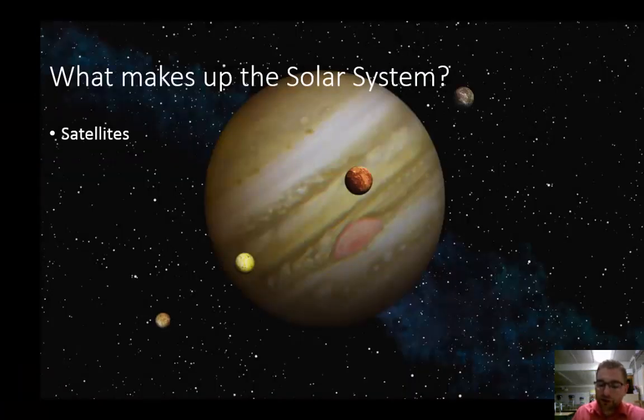Except for Mercury and Venus, every planet in our solar system has at least one natural satellite, or moon. Earth has the fewest moons with just one. Jupiter and Saturn each have more than 60. Some dwarf planets also have their own natural satellites.